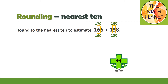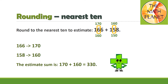Notice that the first addend is closer to the upper benchmark, so I will round it up to 170. The second addend is also closer to the upper benchmark, so I will round it up to 160. Then the estimate sum will be the sum of the two rounded numbers, so the estimate sum is 170 plus 160 equals 330.